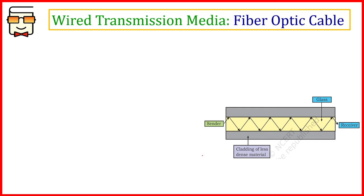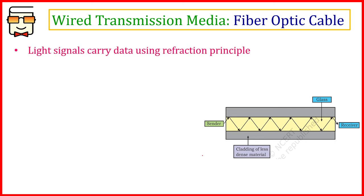Now let's move on to the fiber optic cable. The biggest difference here is that data is transmitted using light signals. In the case of twisted pair and coaxial cables, electric signals were used to carry data, but in fiber optic cables, light signals are used — which is why it is called 'optic,' meaning related to light.